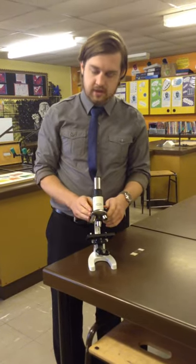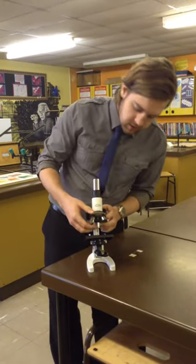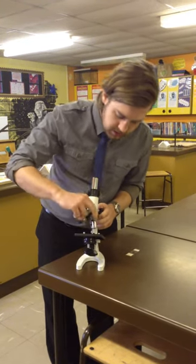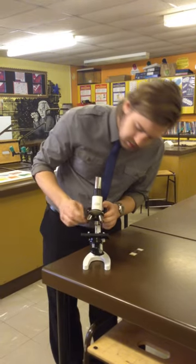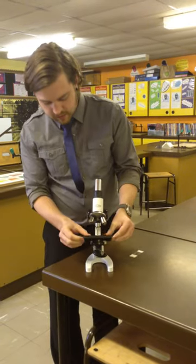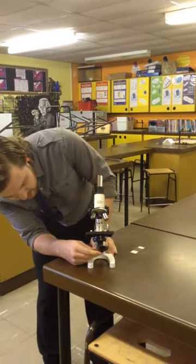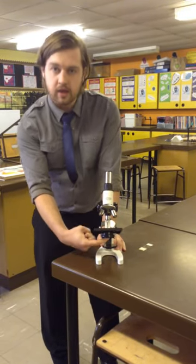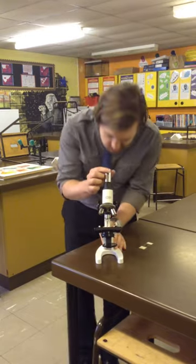The next thing you need to make sure you do, make sure that you have these lenses set to the smallest possible one. So in this case it's the times four magnification. Now we can alter the mirror and make sure that we have light going off the mirror and up through the aperture hole through to the eyepiece.